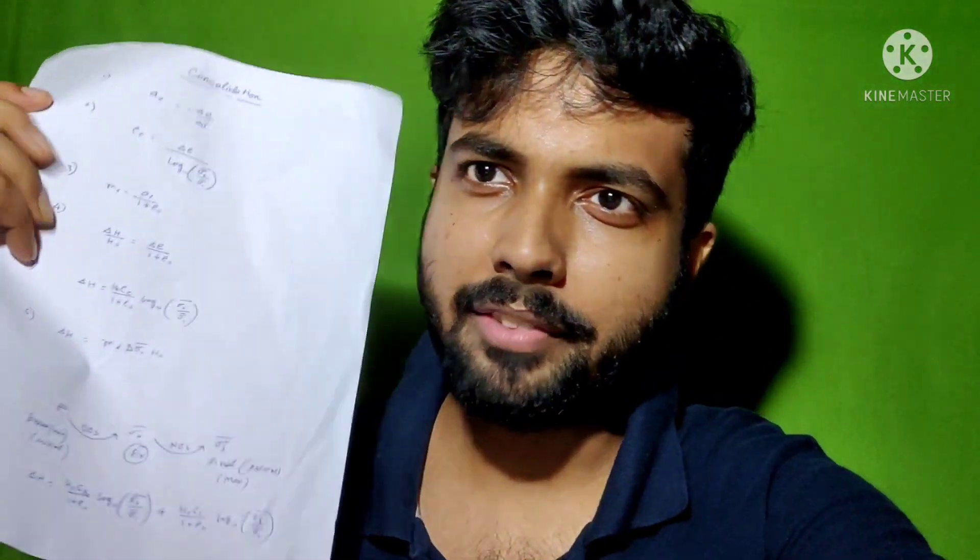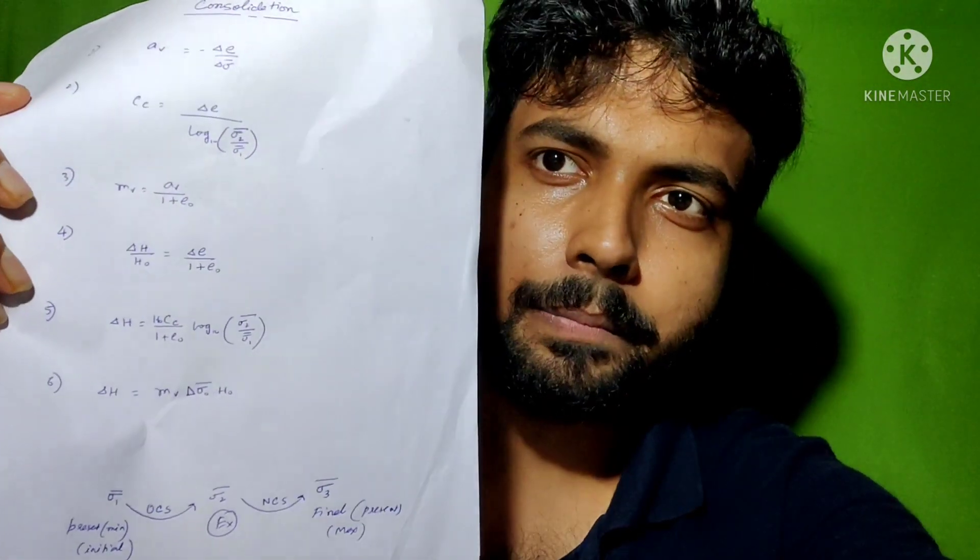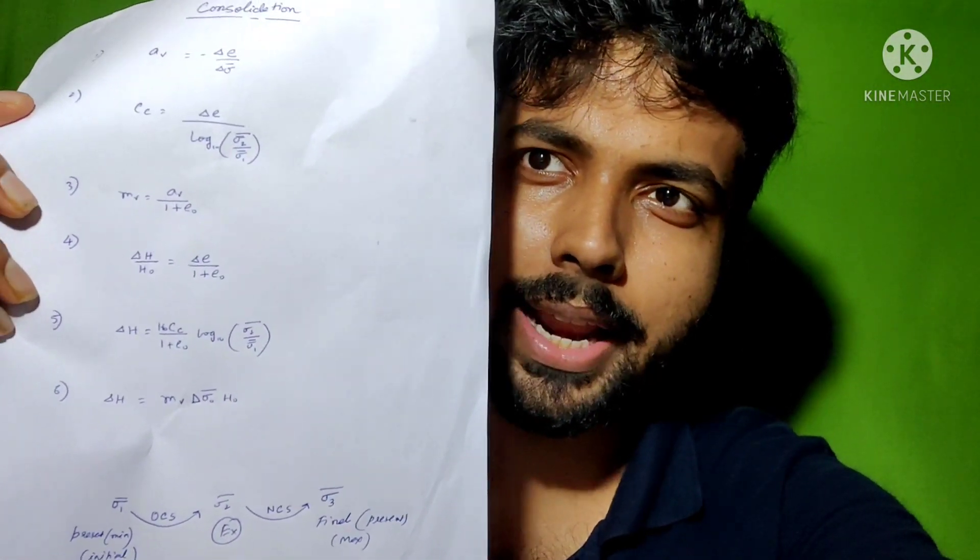The first technique is to write down all the formulas. For example, I have written all the formulas on this A4 sheet — you can see them in this format. I have kept all the formulas for this chapter on consolidation on a single A4 sheet. Just note down all the formulas and paste that A4 sheet somewhere in front of you — that is technique number one.